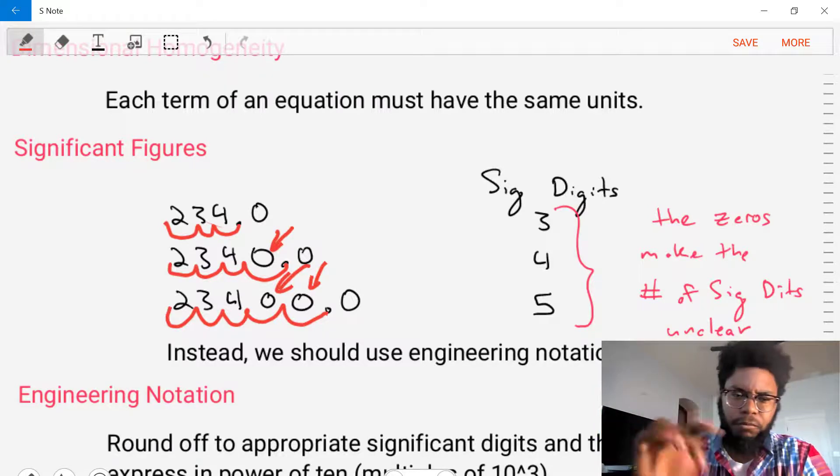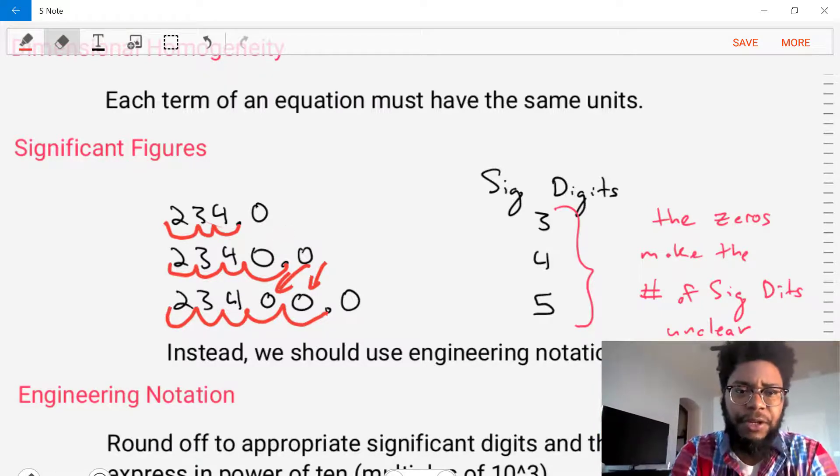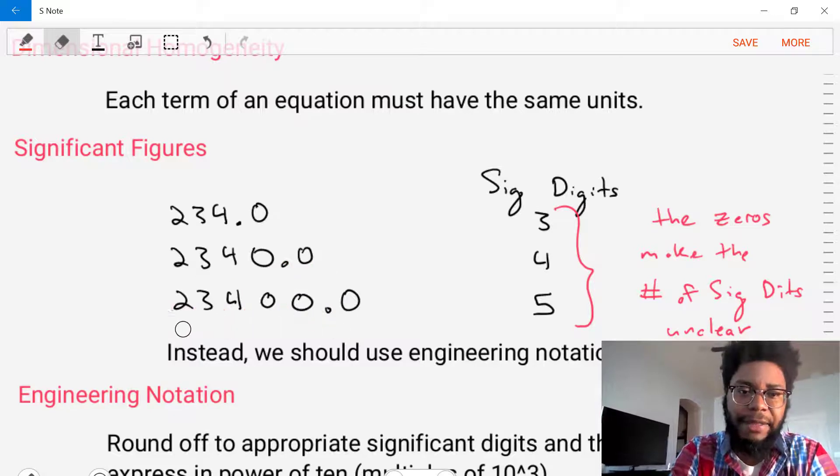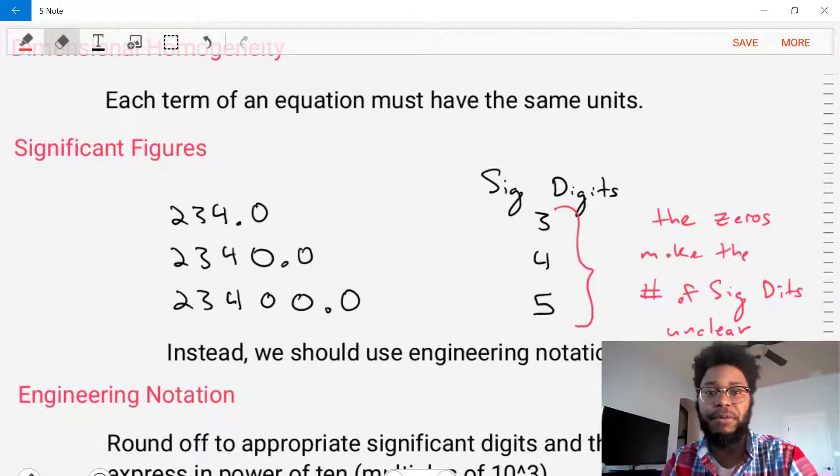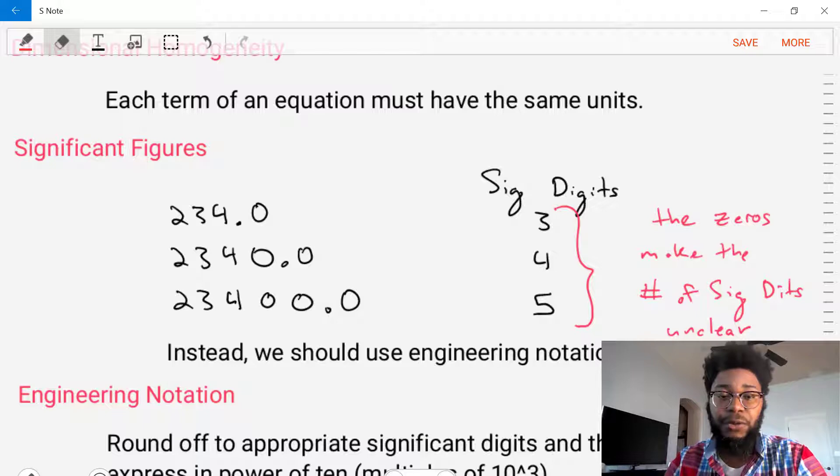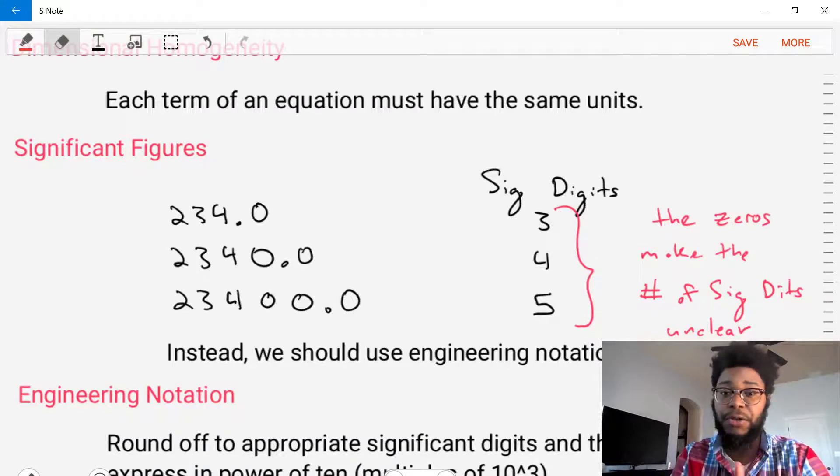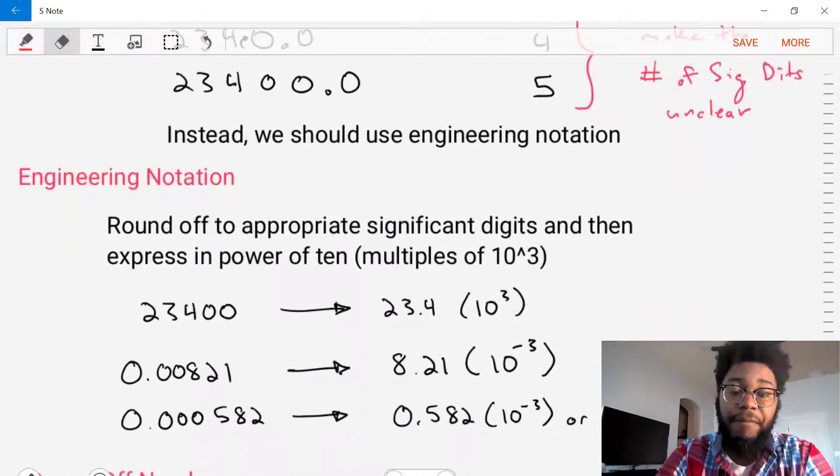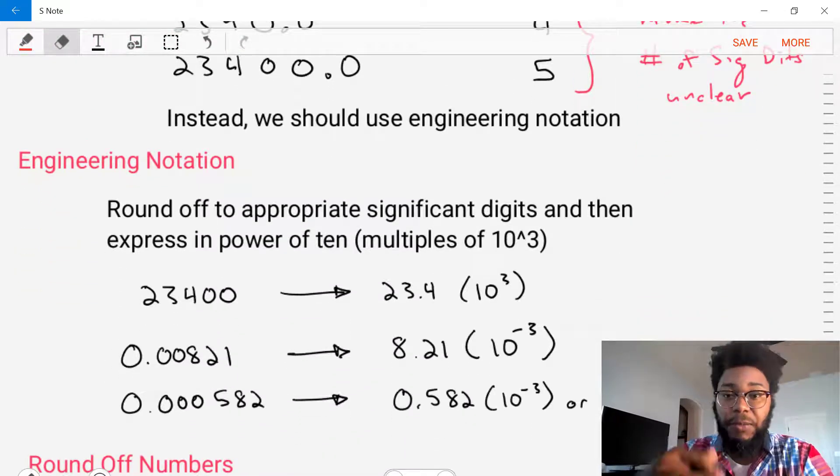So instead of using this notation, this full notation where we write the number out all the way to the decimal point, instead we should use engineering notation. This is a notation that allows us to round off to a good number of significant digits and then express our answers in powers of 10 to multiples of 10 to the three.